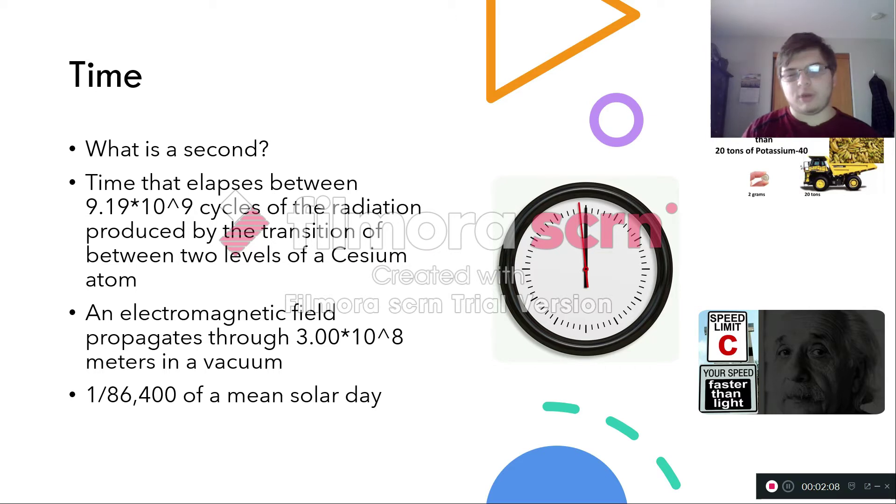And then, of course, someone who said about the Earth's rotation being a second, it's 1 over 86,400 of a mean solar day. Solar day means the Earth is straight, there's no tilt, it's basically straight and it rotates at that speed.